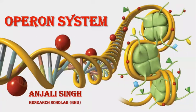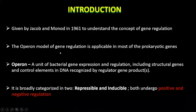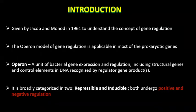Hello friends, this is Anjali Singh welcoming you all to a small session on the concept of the operon model. This model is a concept of prokaryotic gene regulation, proposed by Francis Jacob and Jacques Monod from France in 1961. It was first described in E. coli and is defined as a bacterial expression and regulation unit that includes structural genes and control elements, which are recognized by regulatory gene products.